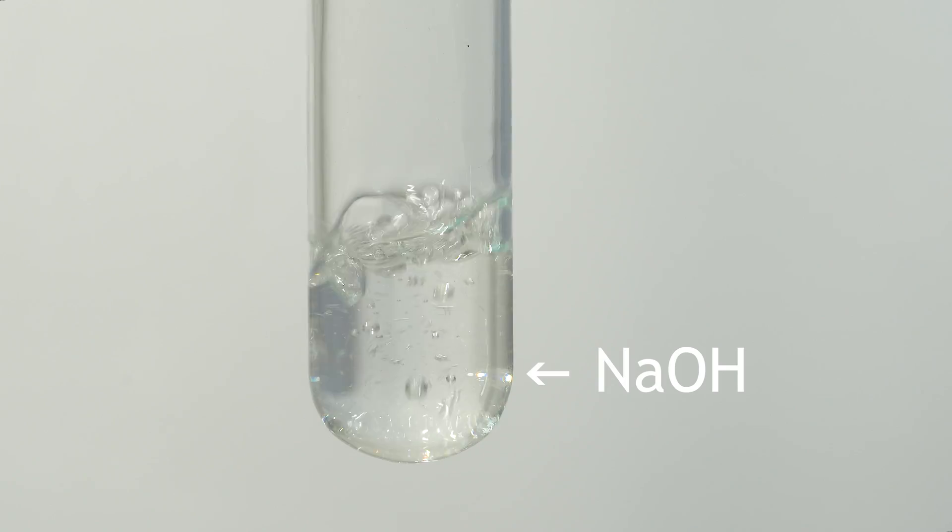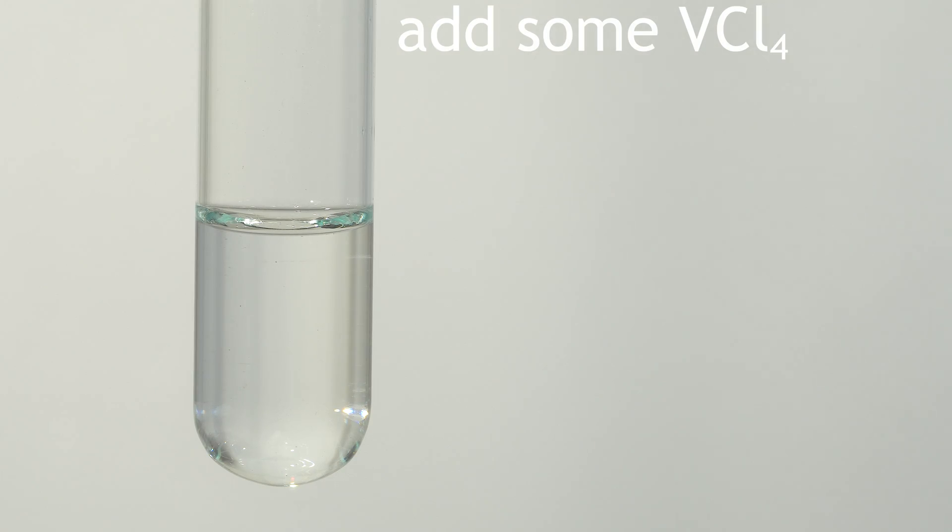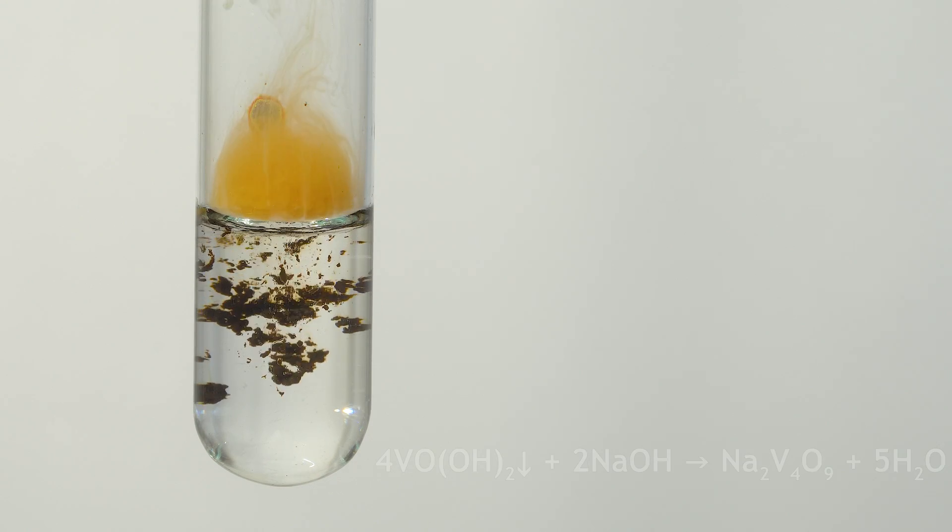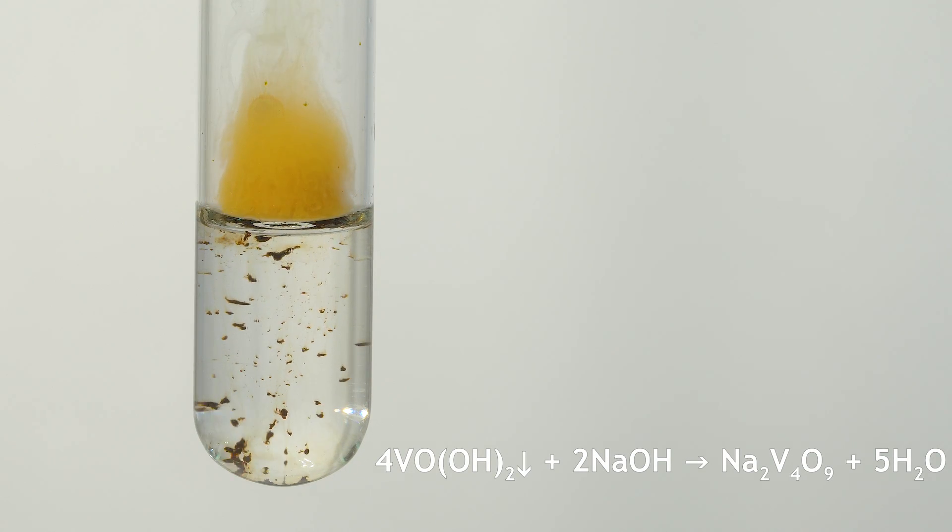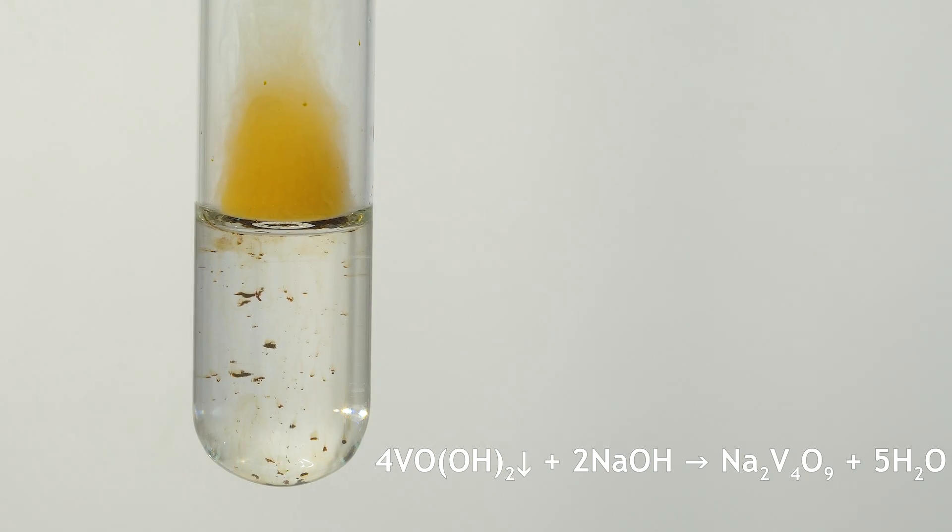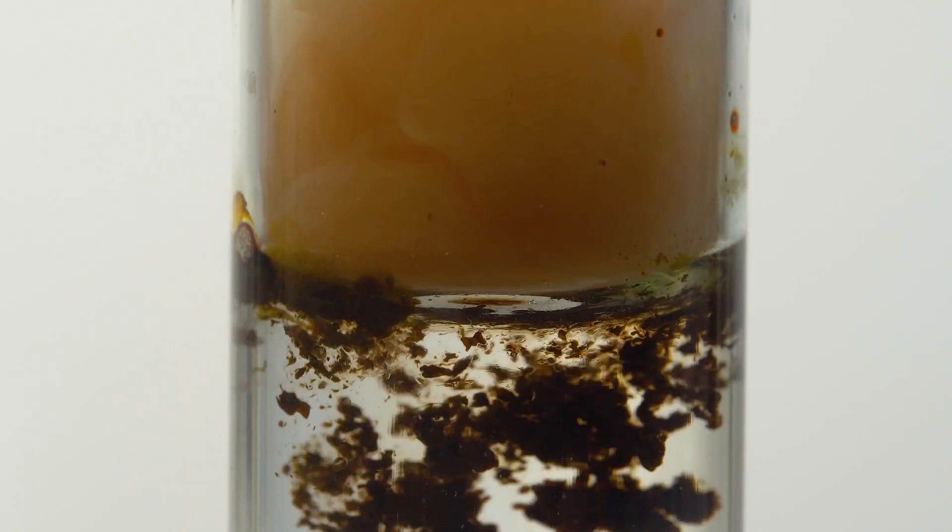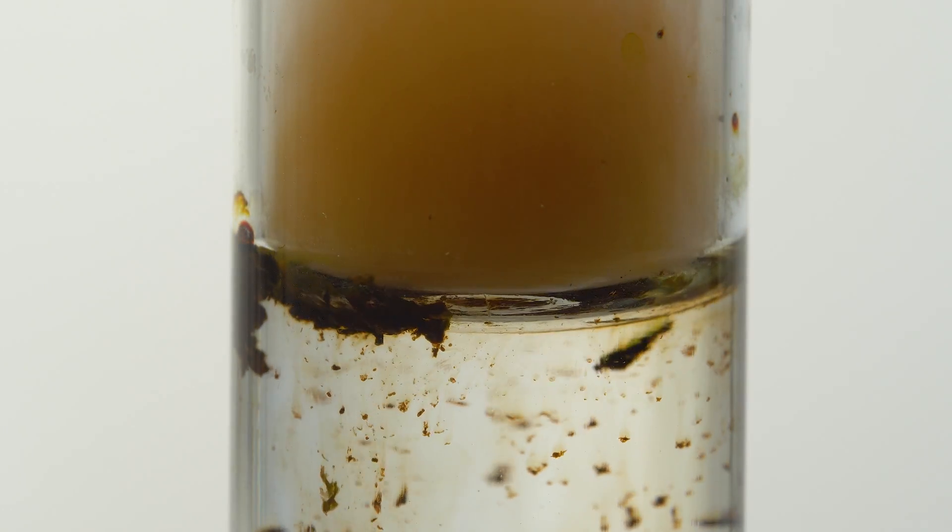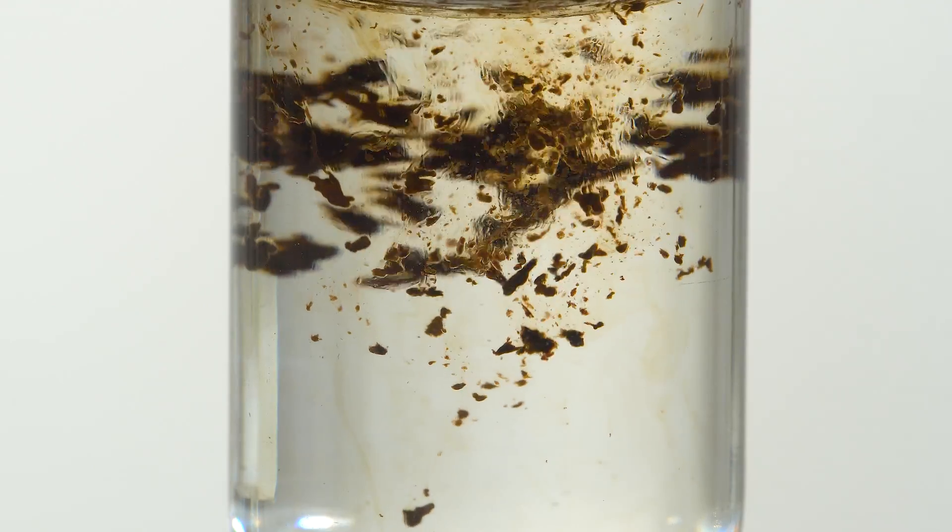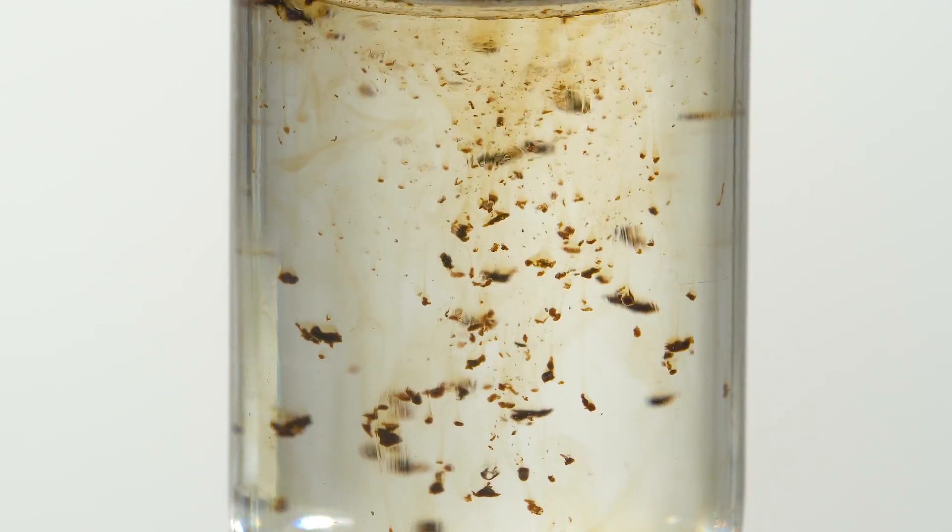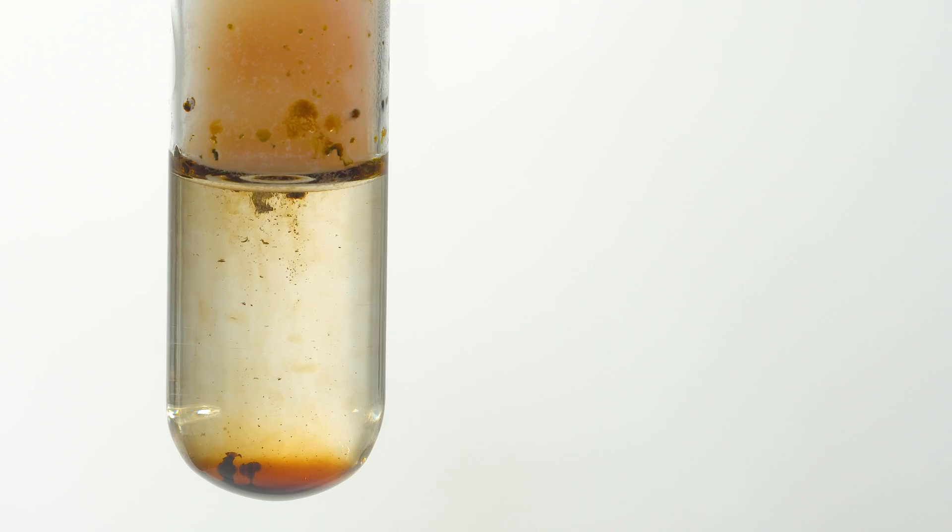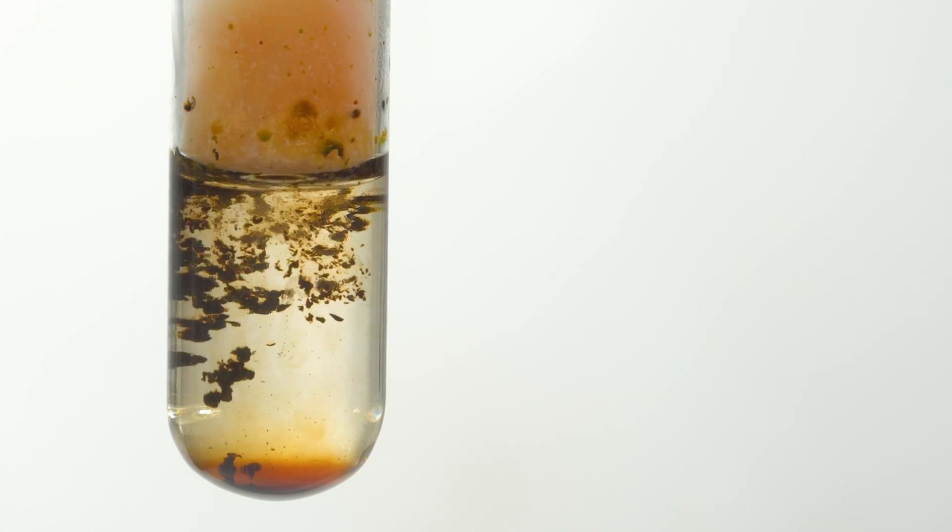When reacting with alkali, vanadium oxide dihydroxide forms first, which dissolves in excess alkali to produce nona-oxytetravanadate. As the alkali concentration decreases, the precipitate no longer dissolves.